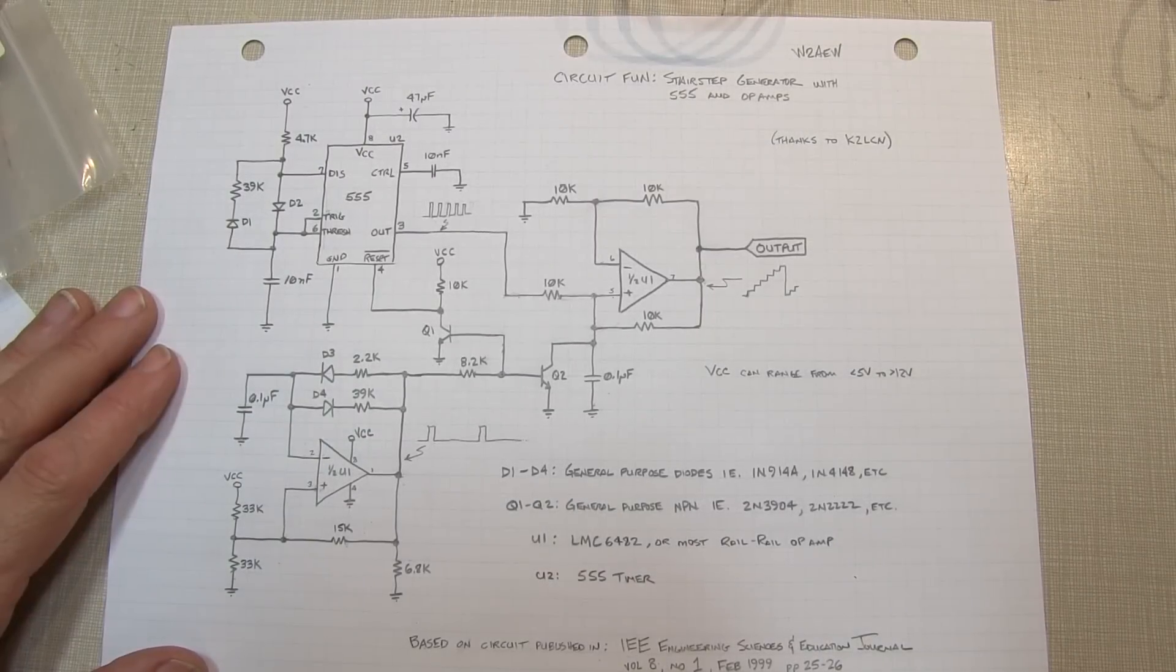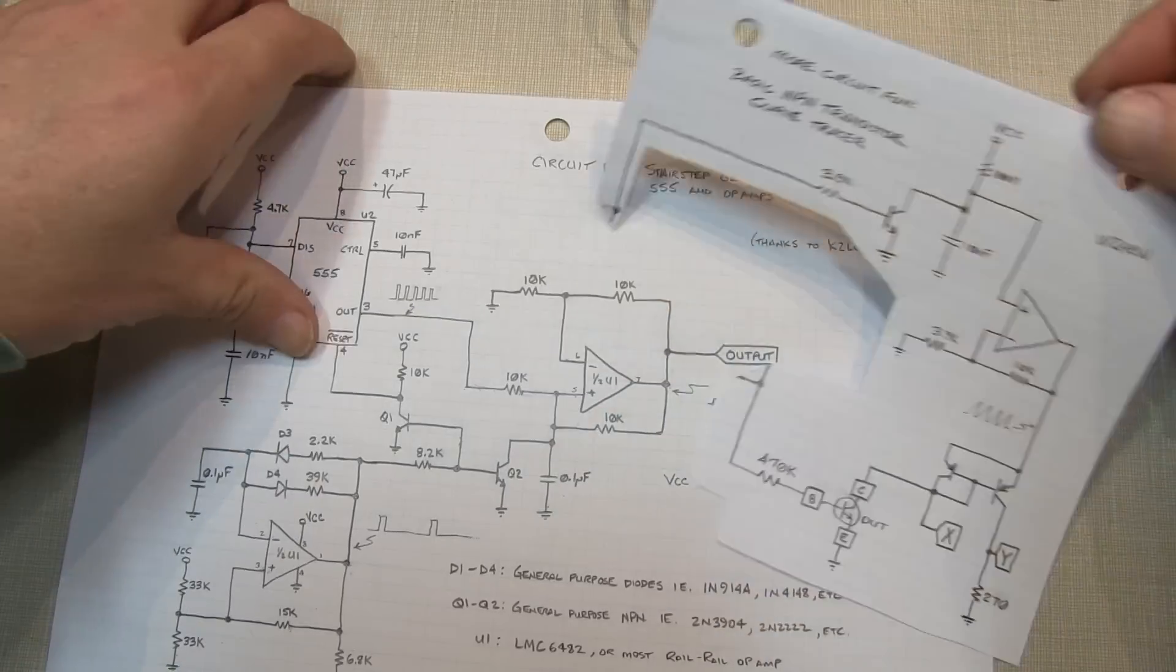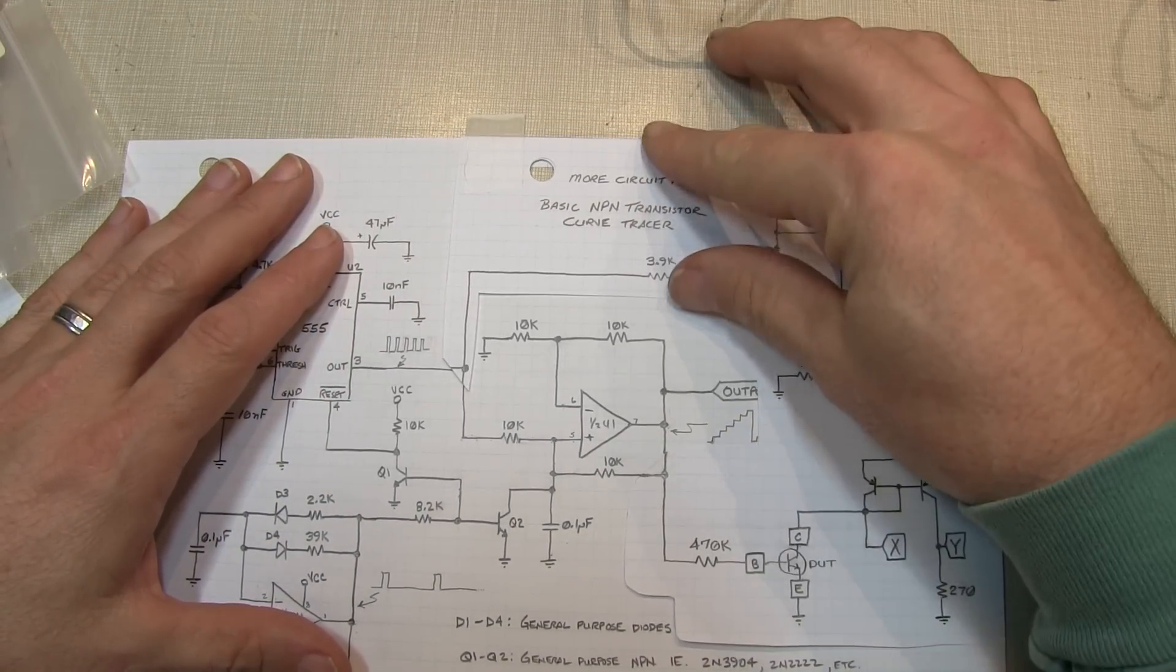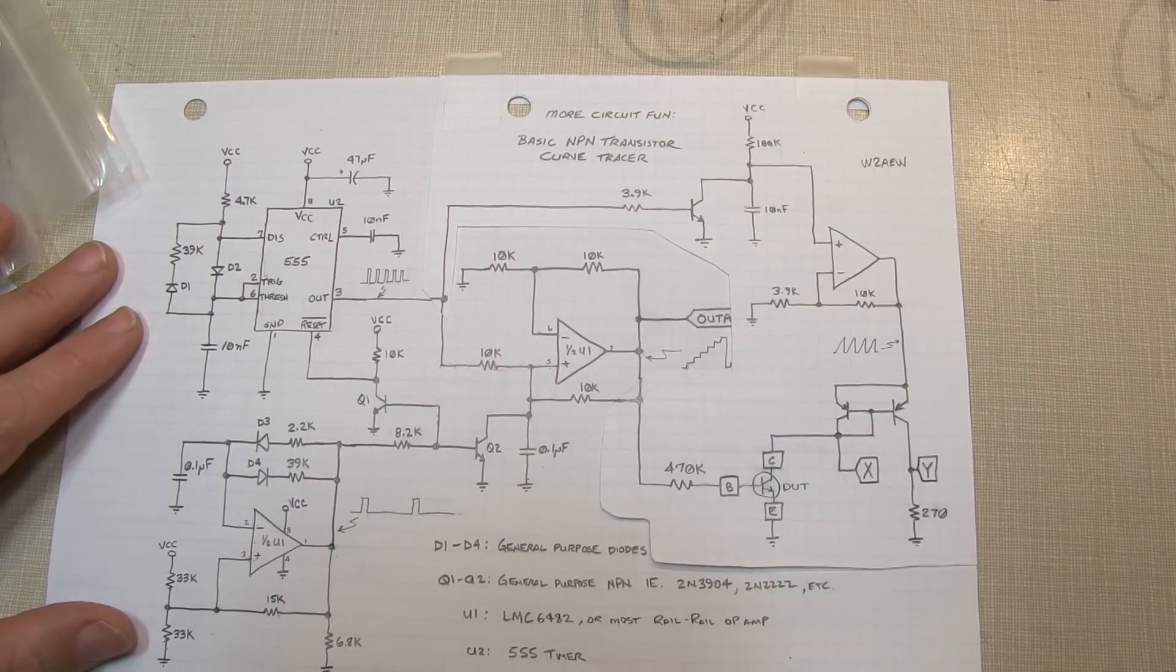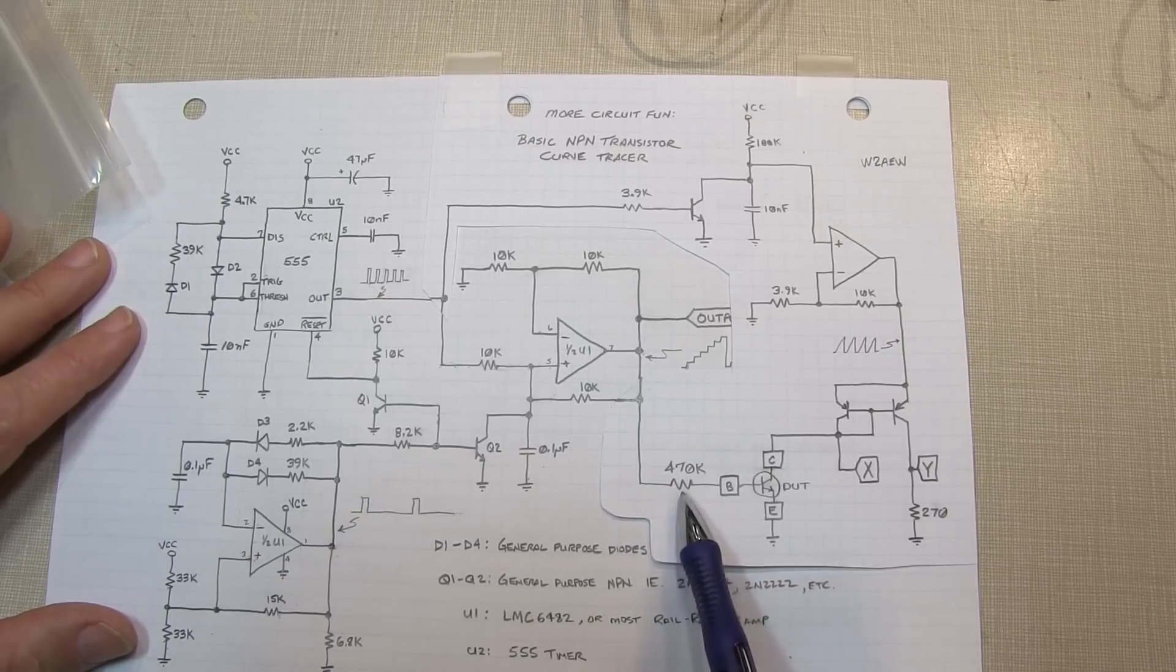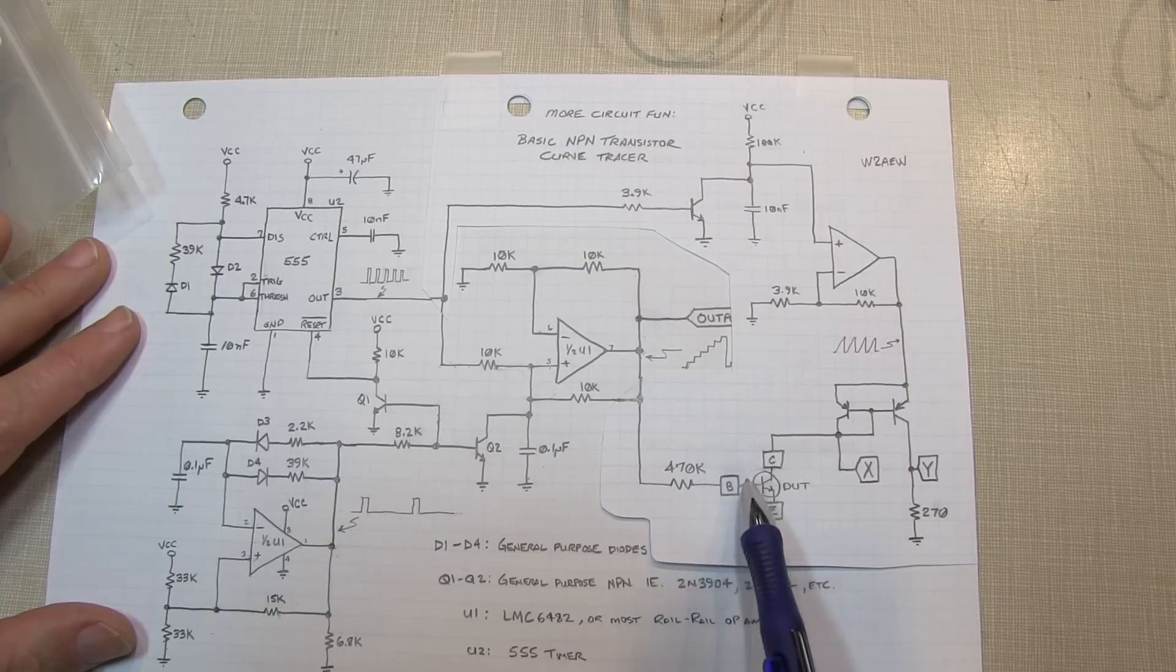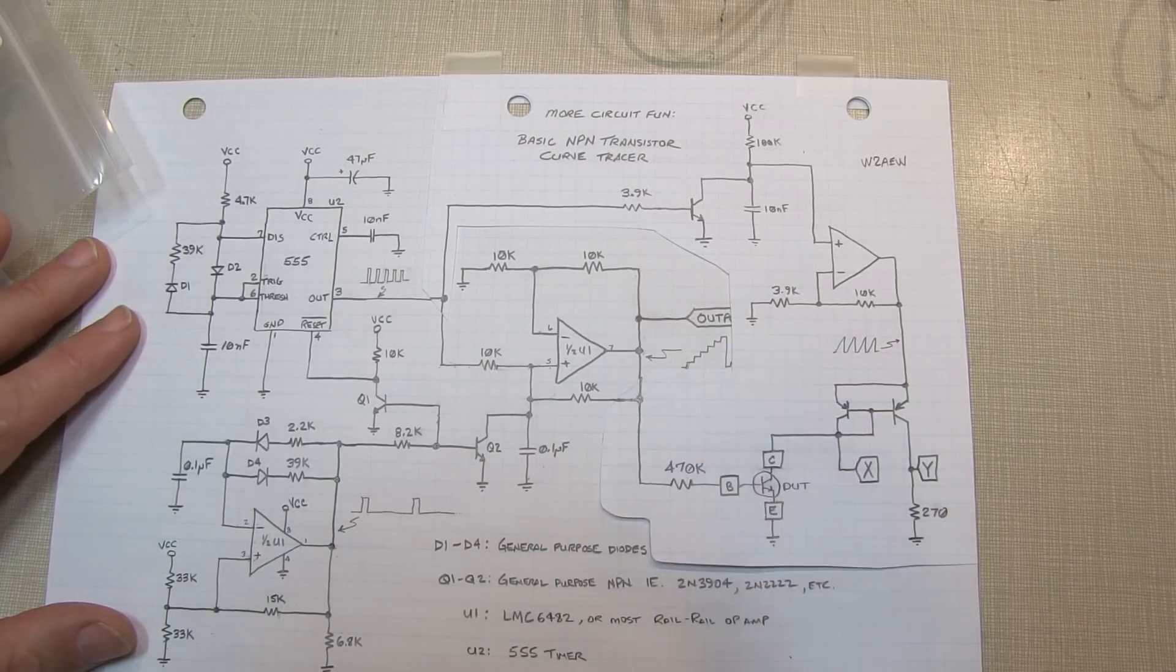Let's look at how we've added these components to our stair step generator. I've got them drawn out here on this portion of the schematic, and we can overlay this on top of our existing stair step generator, and now you can see how we've turned this thing into our curve tracer. Here's the resistor that's used to drive the base of the transistor under test, essentially establishing the various steps of base current.